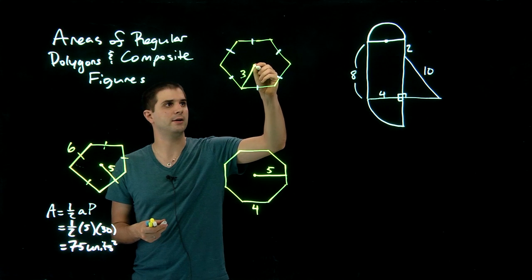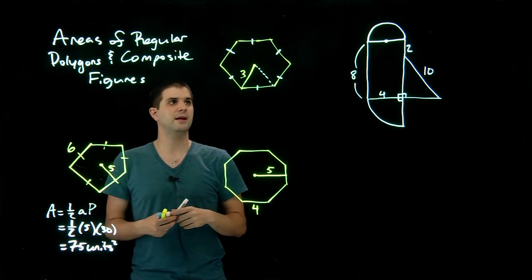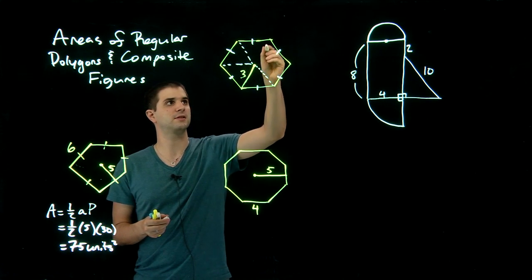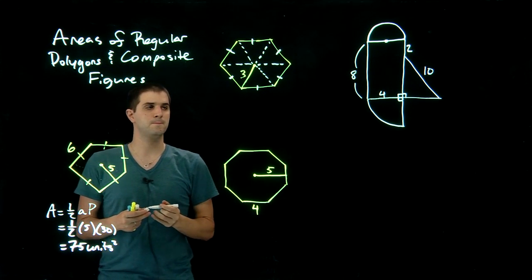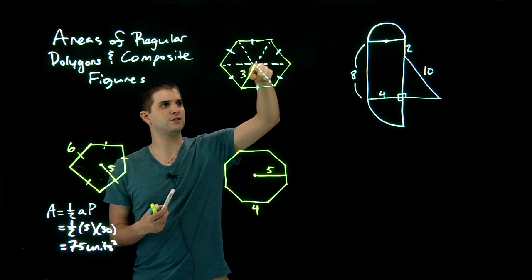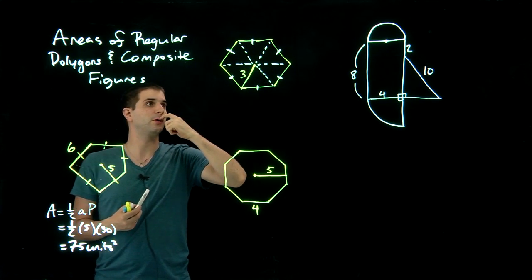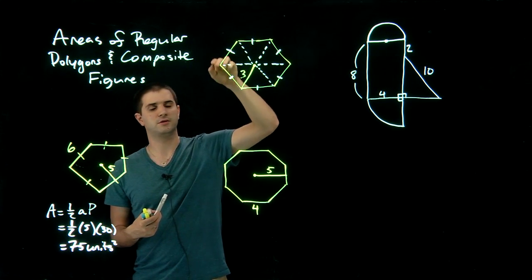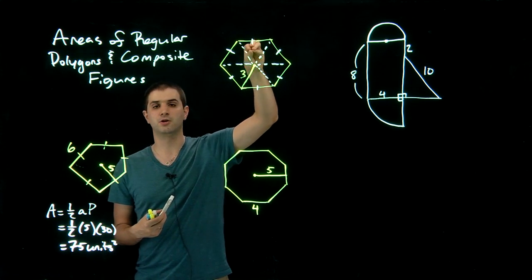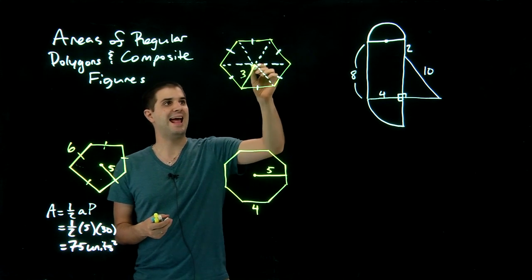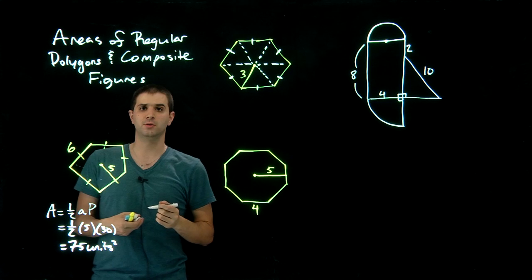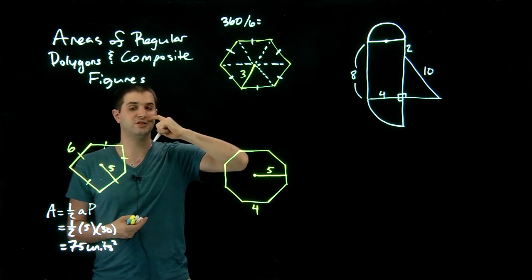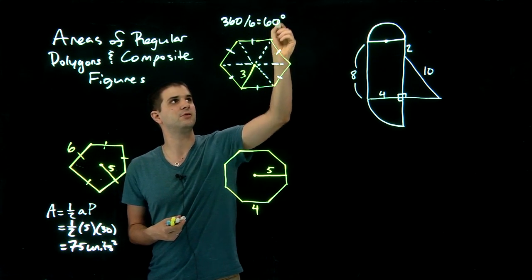I would encourage you to draw in this triangle and think about how many triangles there are total in this regular hexagon. There are going to be six. If this is all 360 degrees, and we know all the radii are equal and all the sides of the polygon are equal, then all of these triangles are congruent. If those triangles are congruent, these angles must all be congruent as well. There are six congruent angles, and since the total is 360 degrees, that's 60 degrees per angle.